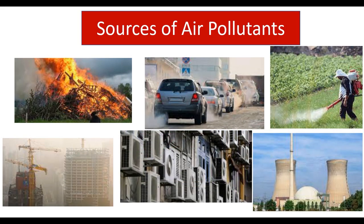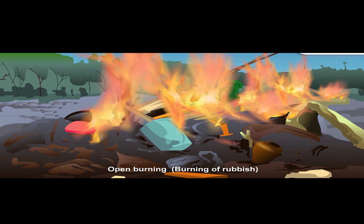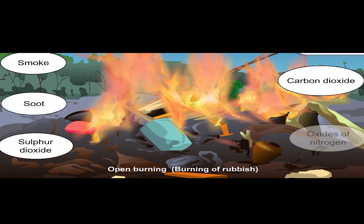Air pollution is the result of various human activities. Let's look at several sources of air pollution and examples of pollutants that are released into the atmosphere. The first source of air pollutants is open burning, for example the burning of rubbish. Open burning releases air pollutants including smoke, soot, sulfur dioxide, carbon dioxide and oxides of nitrogen.